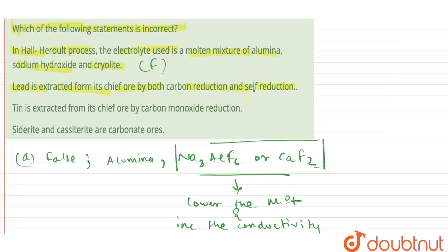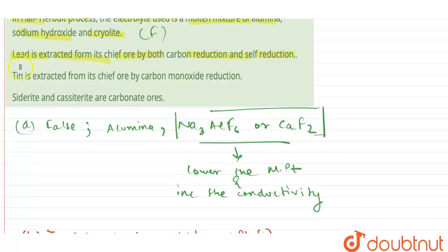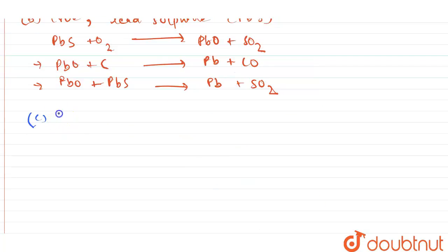We have the third statement: Tin is extracted from its chief ore by carbon monoxide reduction. That is absolutely correct. The statement is true. The main ore of tin is SnO2, that is tin oxide, and the name of this ore is cassiterite. So the reaction involved is SnO2 plus two carbon monoxide molecules will give me tin plus CO2. So this will give me tin in the metallic form, and the reduction is via using carbon monoxide. So this is true.